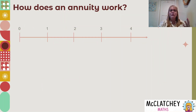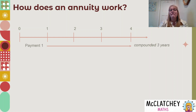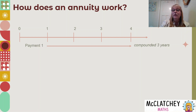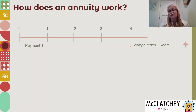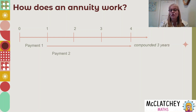Let's look at how an annuity works. In our first example we're looking at a very short time frame of four years. Our first payment goes in sometime during the first year — it could be at the beginning, halfway, or the end — but that payment doesn't actually start attracting compound interest until the end of the first year.